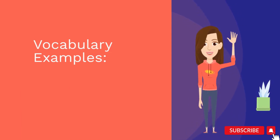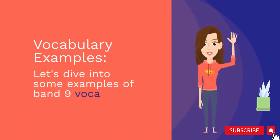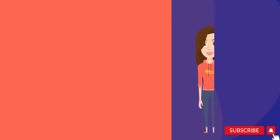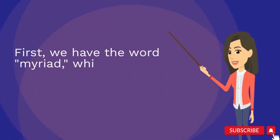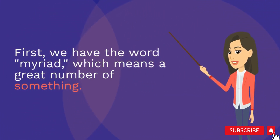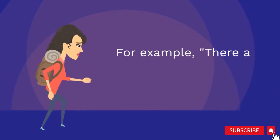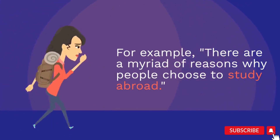Let's dive into some examples of band 9 vocabulary. First, we have the word 'myriad', which means a great number of something. For example: there are a myriad of reasons why people choose to study abroad.